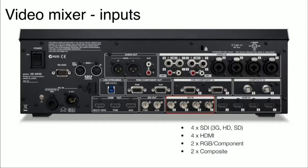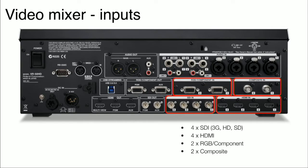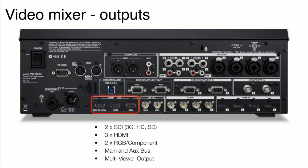Let me show the back of the Roland VR-50. Here's the video mixer input: we have four SDI inputs and four HDMI inputs, so you can mix and match SDI or HDMI camera sources. We also have two RGB component inputs for analog HD or computer signals, as well as composite for standard definition sources. Because the VR-50 has scaling on the input, you can scale that standard definition signal all the way up to 1080p or whatever resolution you're outputting.